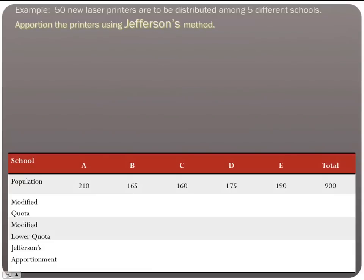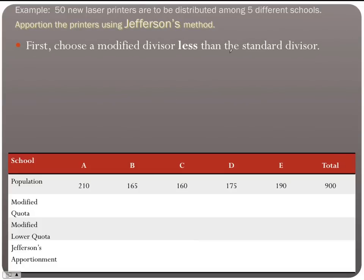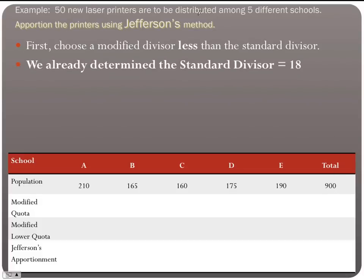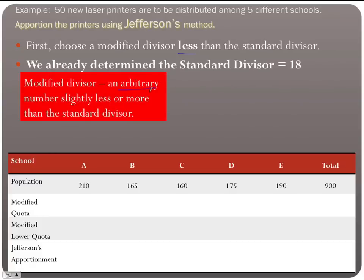Now let's look at Jefferson's method with the same problem: 50 printers, five schools, same populations. Our standard divisor is still 18 (900 ÷ 50). For Jefferson's, we choose a modified divisor less than the standard divisor — it's arbitrary, so let's try 17.5, which is slightly below 18.